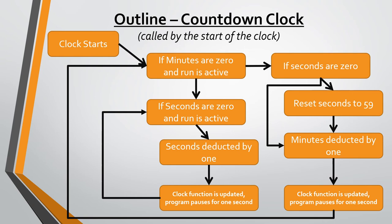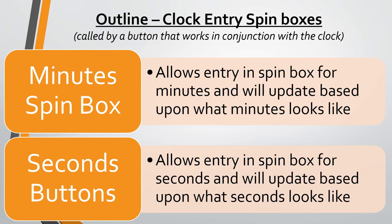The program pauses to give the effect of a real-time countdown and then loops back to check if seconds are still not zero. It keeps going until seconds hit zero, at which point it deducts a minute and resets seconds to 59 — if minutes are not at zero. If the minutes are at zero and it hits zero, the clock stops. It then loops back, sees seconds at 59, and goes around again just like you'd expect a timer to work.